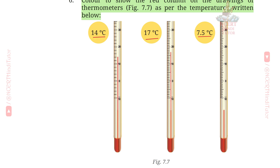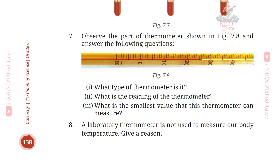Next is 7.5 degrees Celsius. Count up: 5, 6, 7, and 7.5. Mark it at 7.5 degrees Celsius. Friends, you can mark the temperatures in your book or notebook.